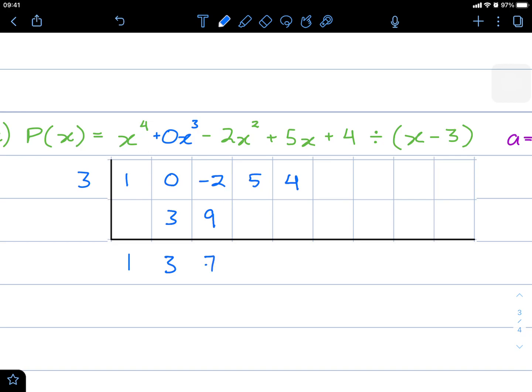3 times 7 is going to be 21. Adding downwards, 26. 3 times 26 is 78. Adding this way, 78 plus 4 is 82.